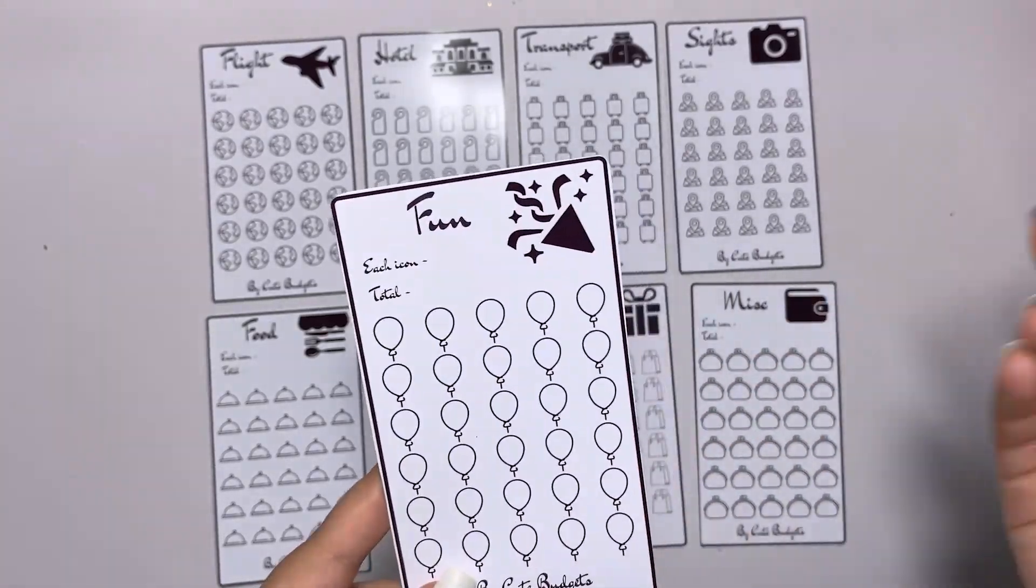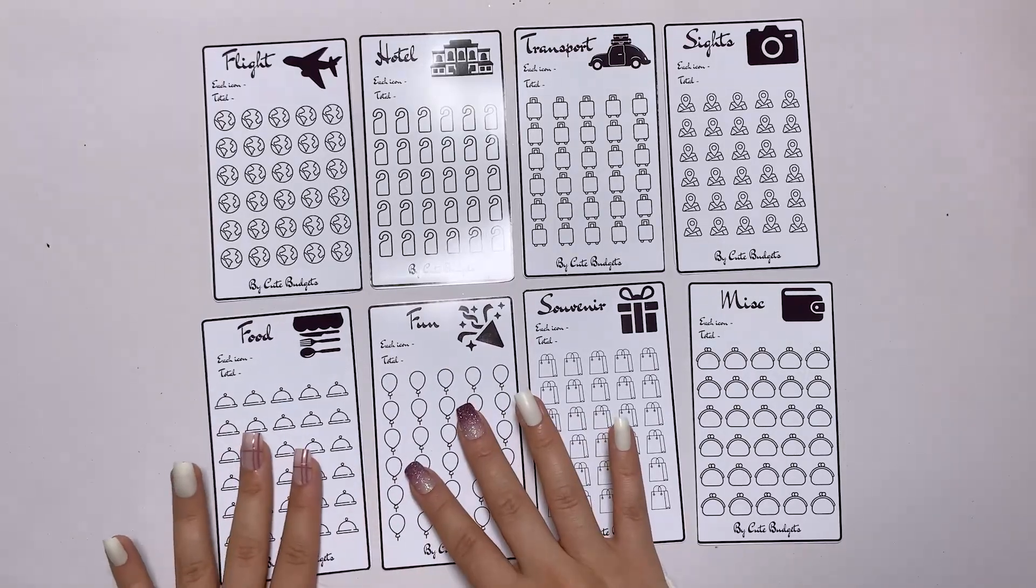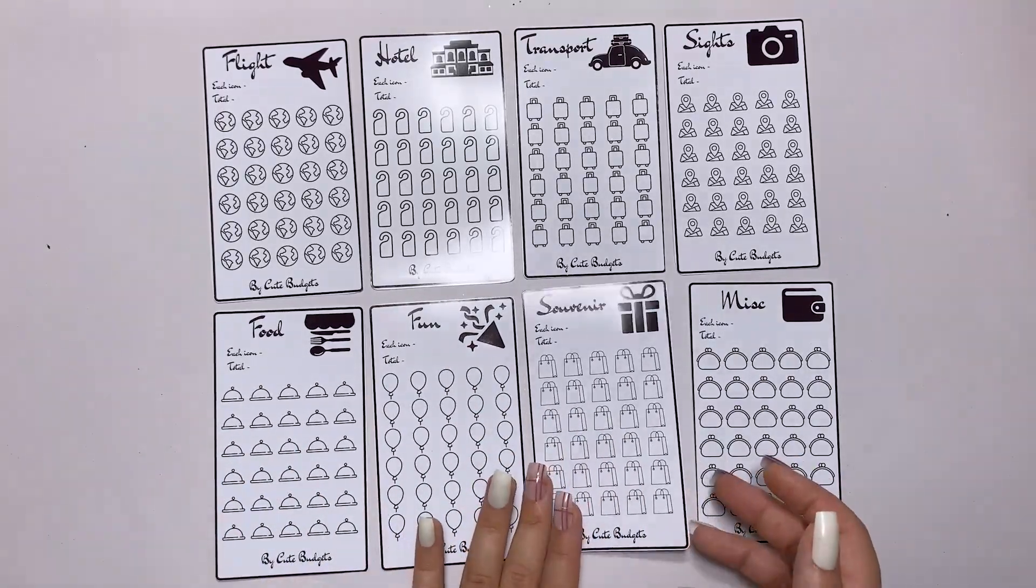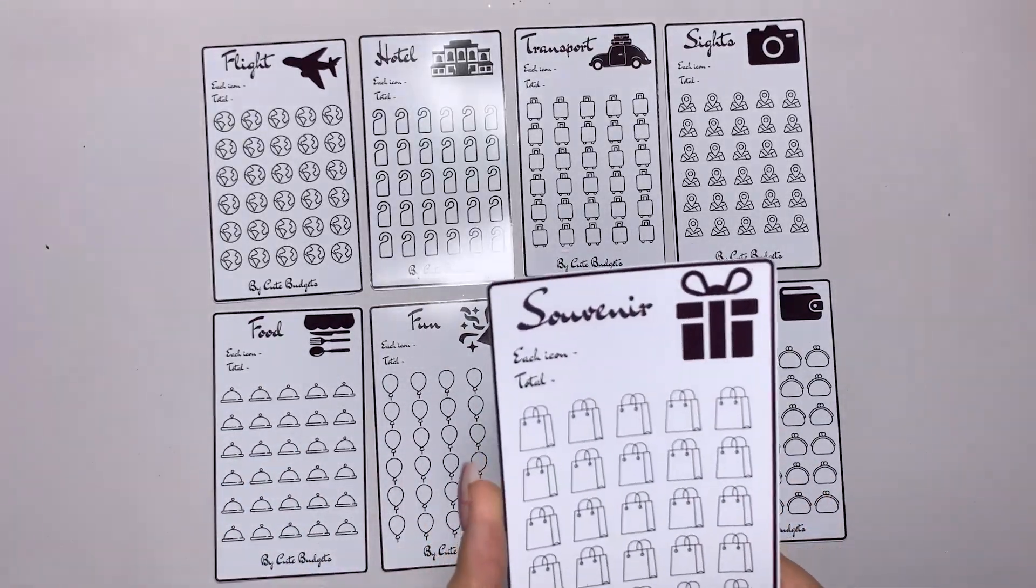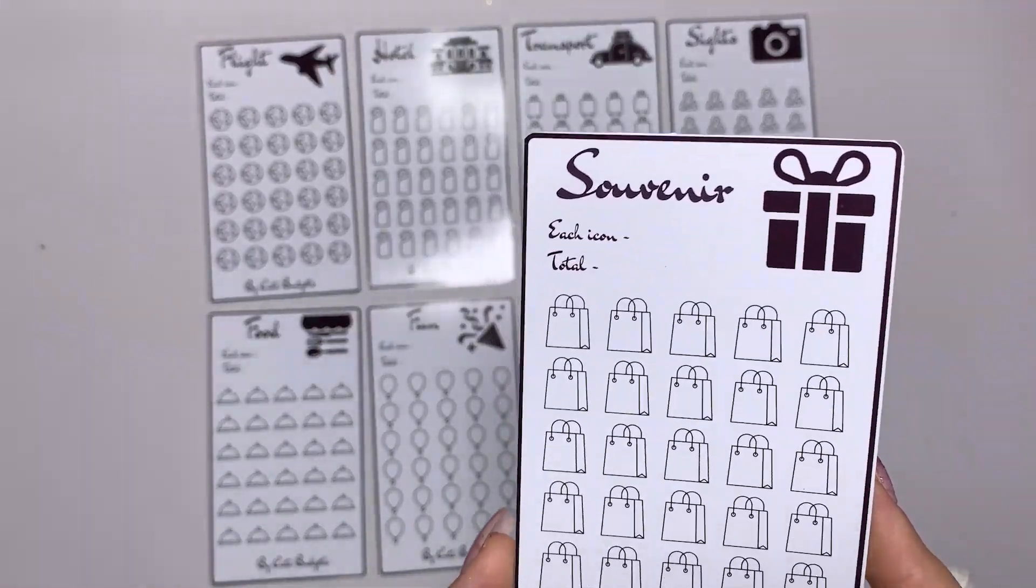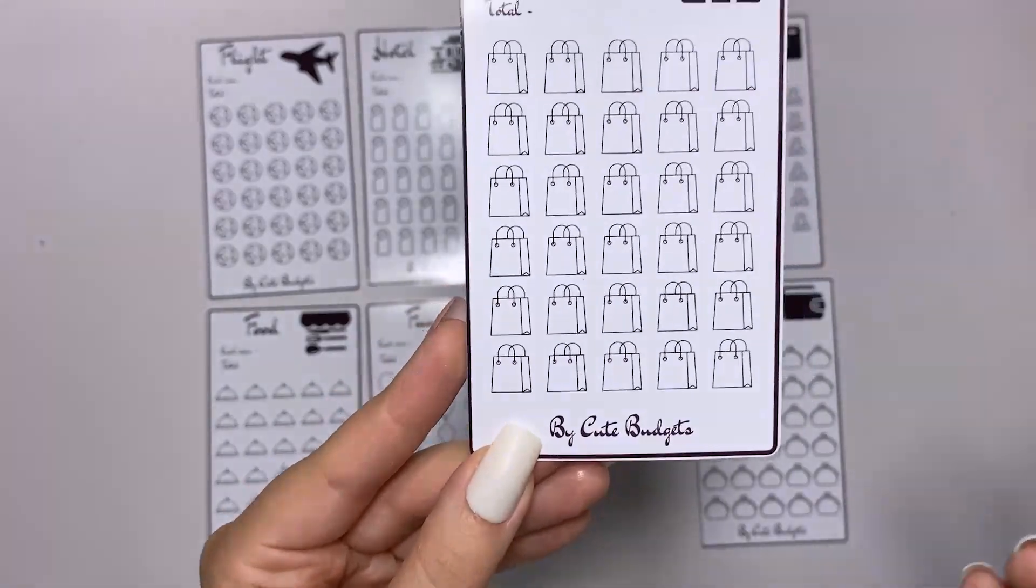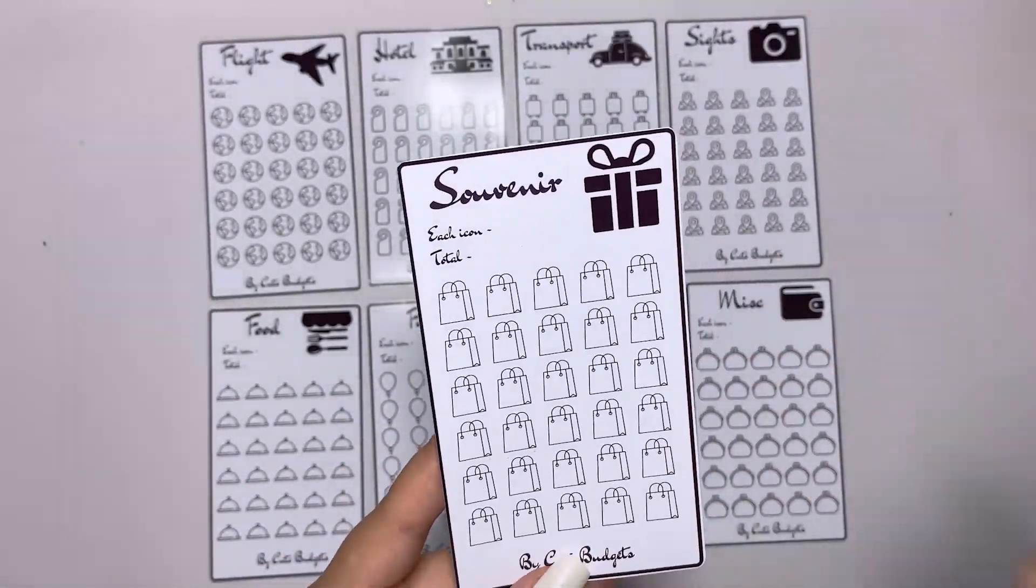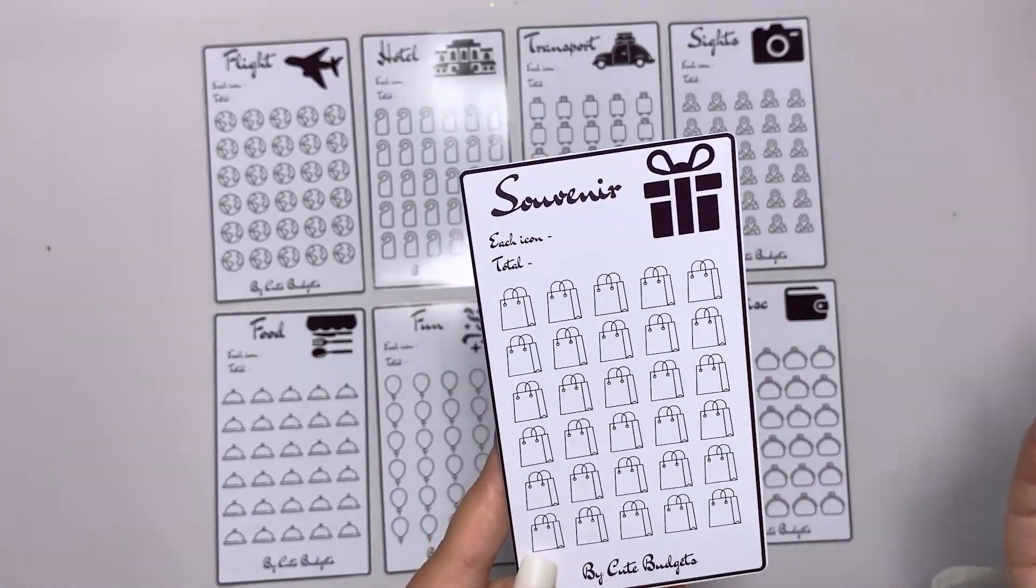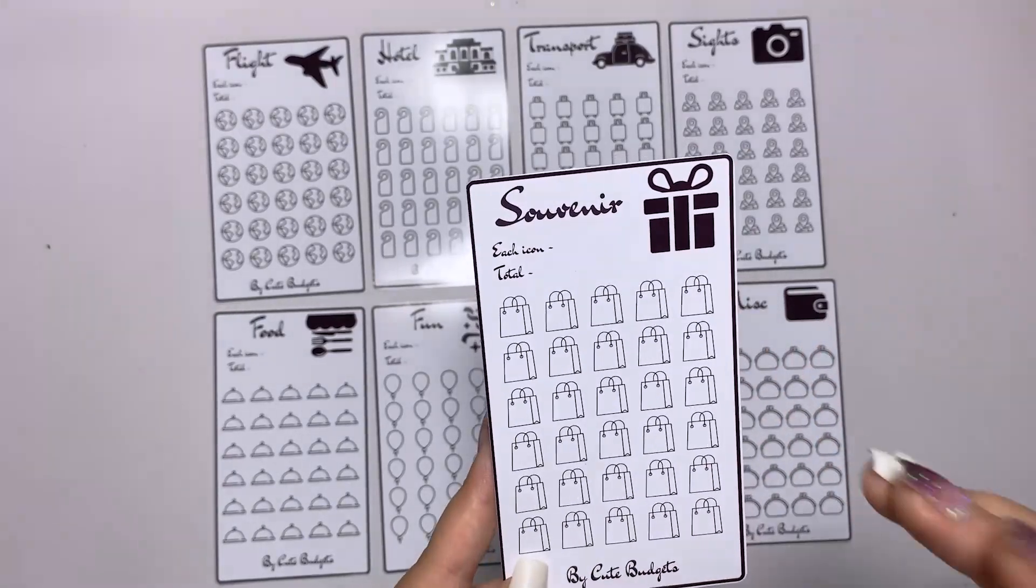Next is souvenirs. If you want to bring souvenirs for your family members or for yourself, just as a reminder that you were there, again it has 30 icons and you can decide how much you want to save for souvenirs.